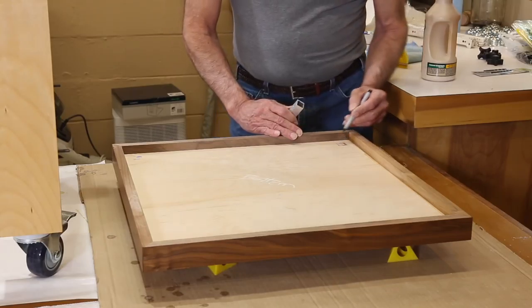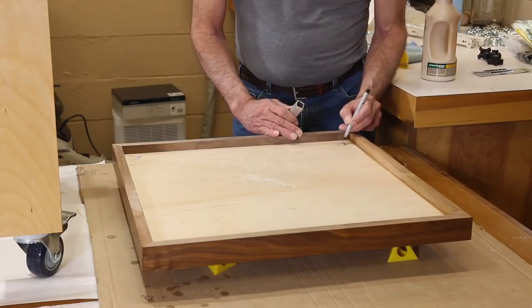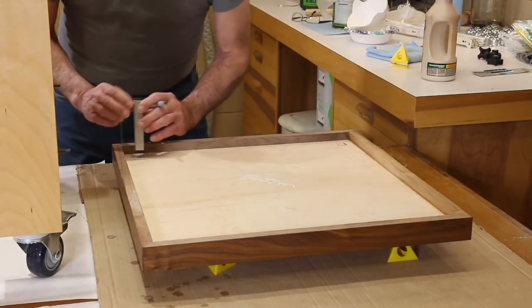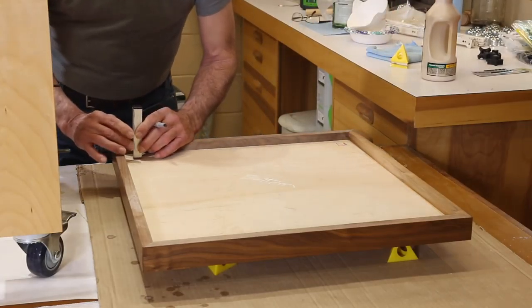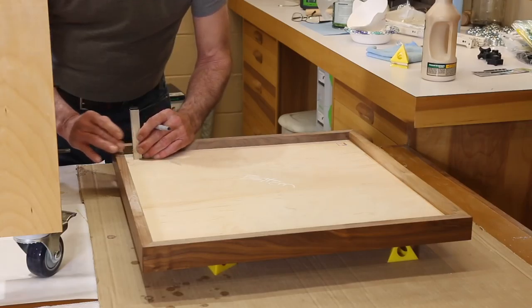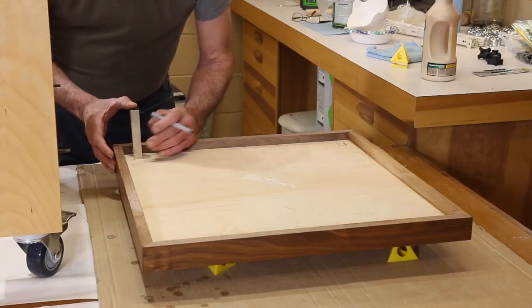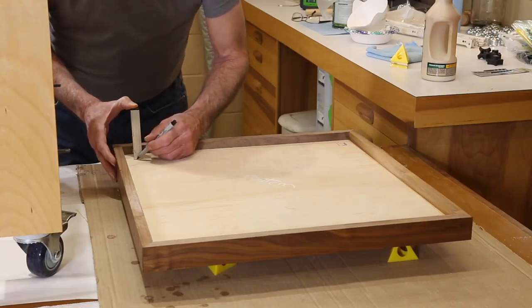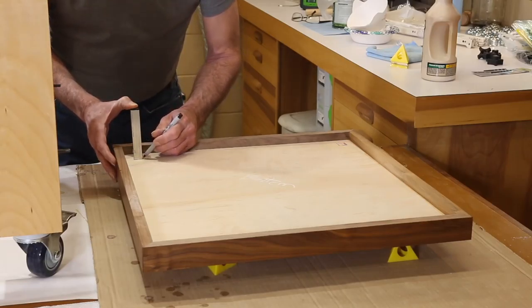What I want to do is get a crisp square there because I want to come back and make an X corner to corner to find the exact center point. I'm going to do that on all of these and get this marked out.